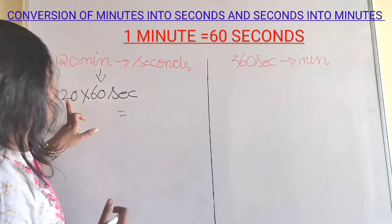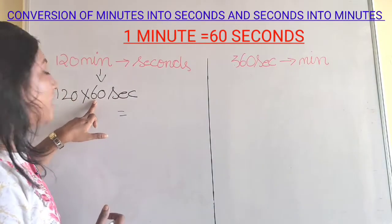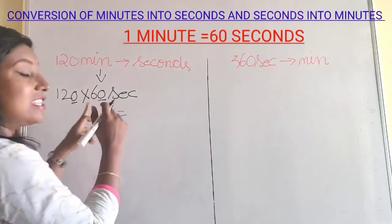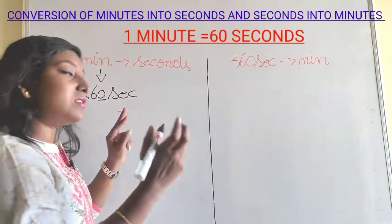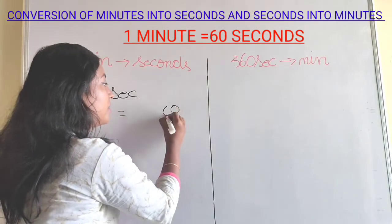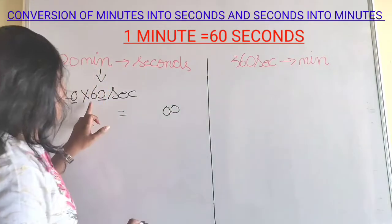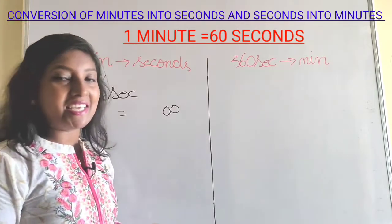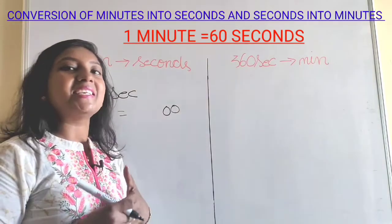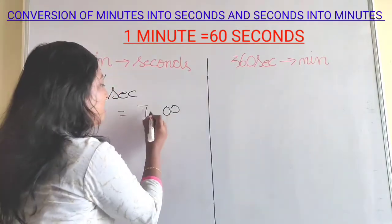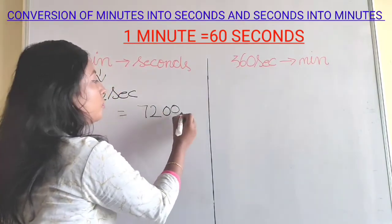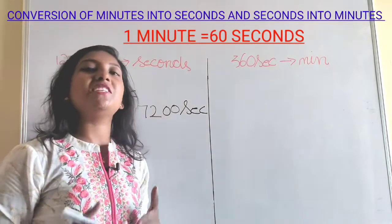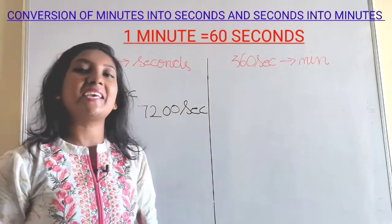Now here, I am bringing down the 2 zeros. As we have 2 zeros, I take those 2 zeros down. Next, 12 times 6 is 72. So we get 7200 seconds as our answer.